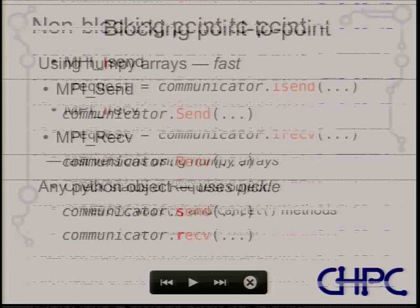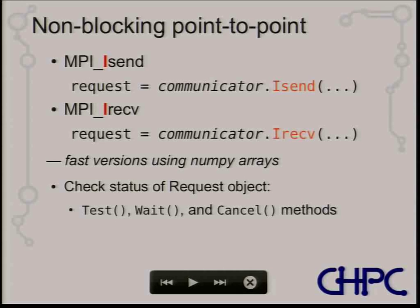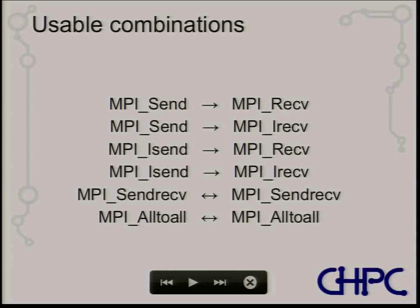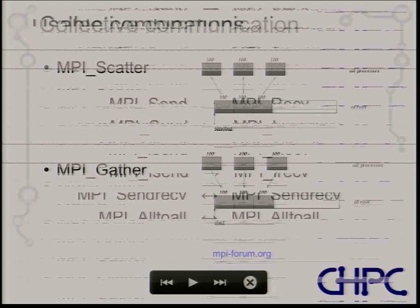Non-blocking methods — ISend and IRecv — are essentially buffered: they return immediately because the message is copied into a buffer and waits for the network. They return a request object so you can test whether it's completed, force a wait, or cancel. Combinations include blocking and non-blocking mixed, a simultaneous send-receive, and an all-to-all which sends from all processes to all processes.